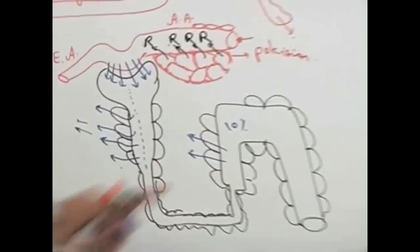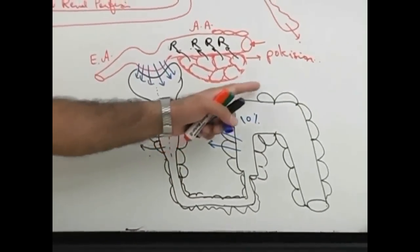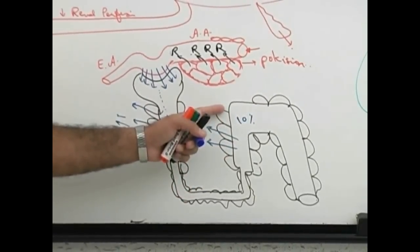This is the end of, this is the beginning of distal convoluted tubule and end of the thick part of ascending limb of loop of Henle.